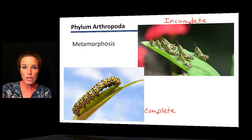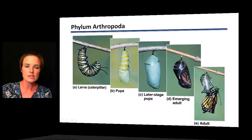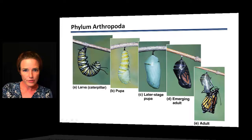Looking at the different stages of butterfly metamorphosis, this is a complete metamorphosis. Notice that the caterpillar is completely different from the adult butterfly — they're not even really recognizable as the same type of organism.